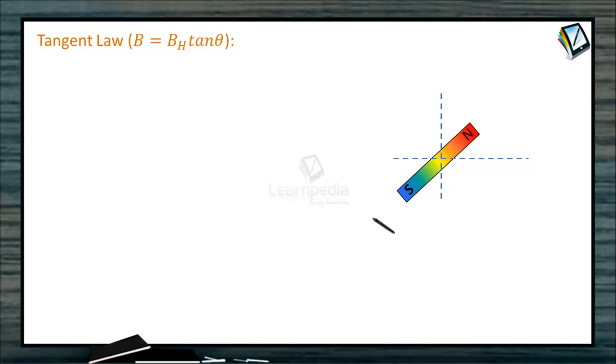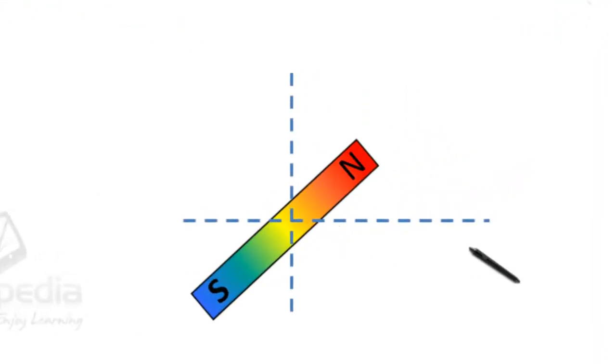Let us first start with Tangent Law in Magnetism. When a small magnet is suspended in two uniform magnetic fields, one magnetic field, BH, horizontal component of earth's magnetic field, another is due to bar magnet or some other reason, this is the magnetic field B.